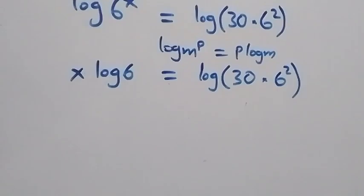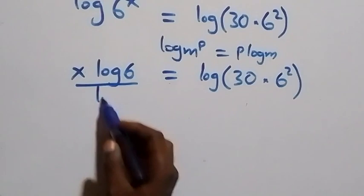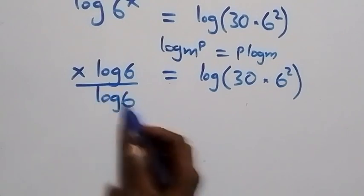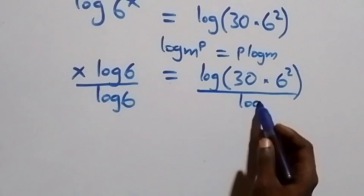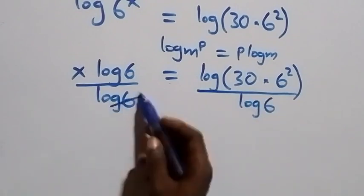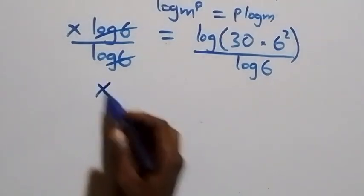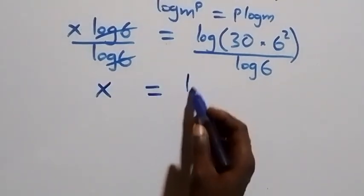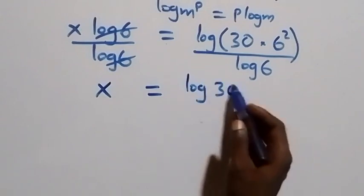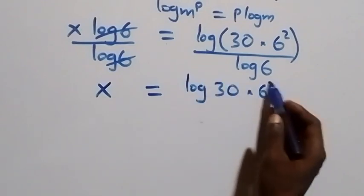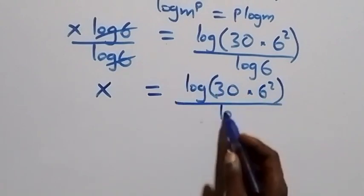Then we divide both sides by log 6. Dividing this side by log 6 and also this side by log 6, log 6 cancels each other, and we have x left, which equals log of 30 times 6 squared over log 6.